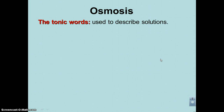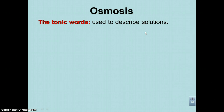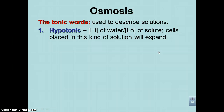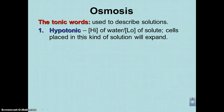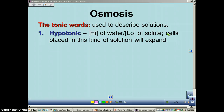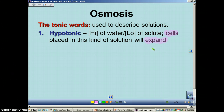When talking about osmosis, you need to know the tonic words, referred to as tonicity. The first is hypotonic — high concentration of water, low concentration of solute. The word specifically refers to the low part. A helpful memory trick: hypo equals more water. If you put a cell in a hypotonic solution, the cell will expand — water moves into the cell.